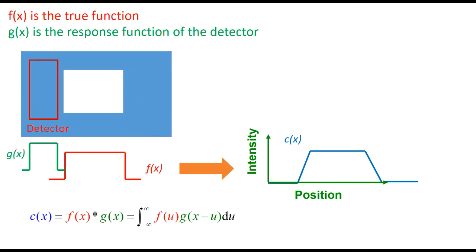In many measurement systems, what we measure is not the true function, but is affected by the properties of the system making the measurement. If we describe the true function by f(x), and the properties or response function of the measurement system by g(x), then what we measure is c(x), which is given by the convolution of the functions f(x) and g(x).